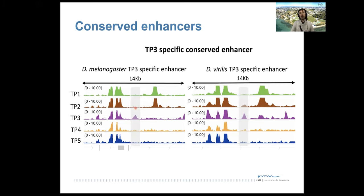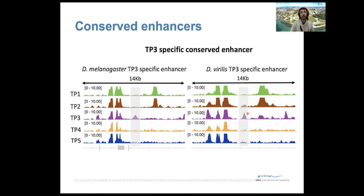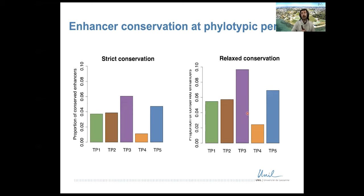To compare the putative enhancers between species, we align the genomes. This is an orthologous region of the genome between melanogaster and virilis. What we observe is that this orthologous region in melanogaster has a very specific enhancer of stage three — the phylotypic period — and in virilis, the orthologous region also has a very specific enhancer of stage three. So this is a stage-three-specific conserved enhancer with very clear orthologous alignment. That's our most stringent definition of conservation; we also use some more relaxed ones. And indeed, we find what was expected from the model: stronger conservation of enhancers at the phylotypic period, both with a strict and a more relaxed conservation definition.